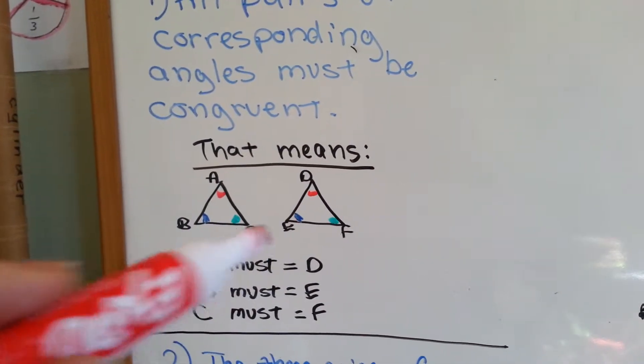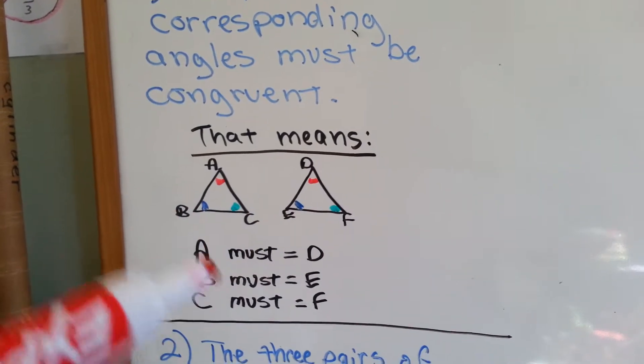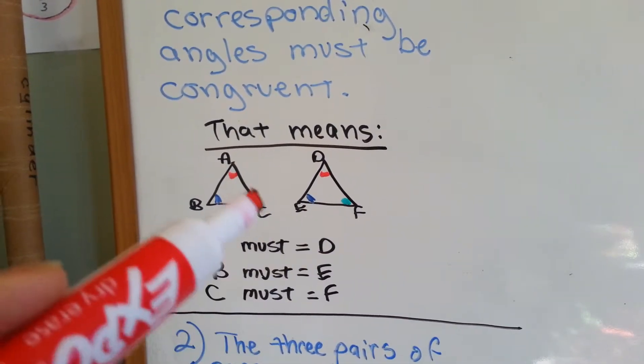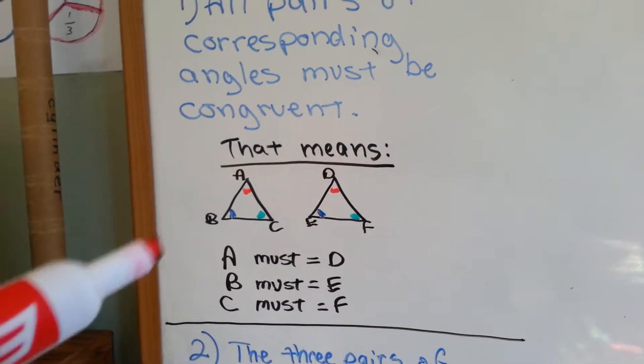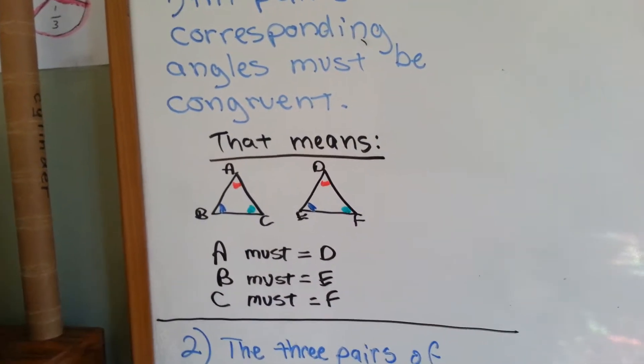And B corresponds to E, because they're both in the bottom left-hand corner. And C corresponds to F, because they're both in the bottom right-hand corner. So those are corresponding angles, but they must be congruent.